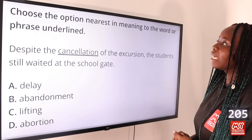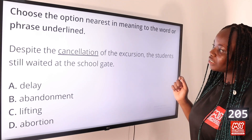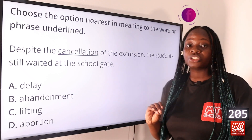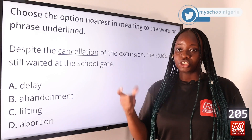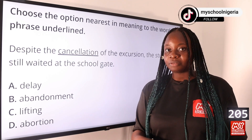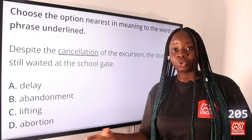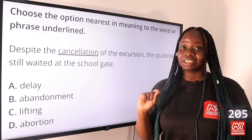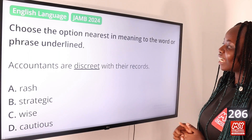Question 205: Choose the option nearest in meaning to the underlined word: 'Despite the cancellation of the excursion, the students still waited at the school gates.' Option A: delay, B: abandonment, C: lifting, D: abortion. The answer is option D, abortion. Abortion and cancellation mean exactly the same thing. Abandonment means to leave something behind, whereas to abort something means to cancel it, to end it forever.